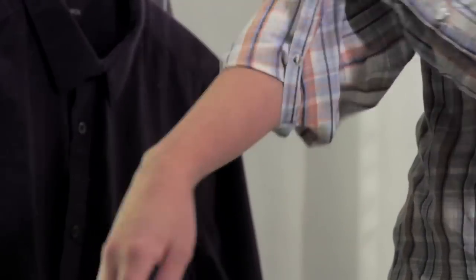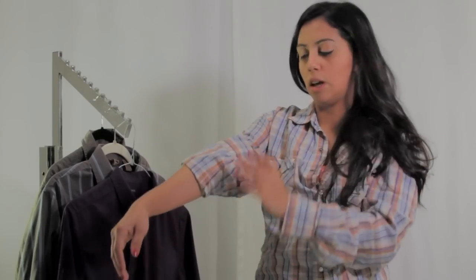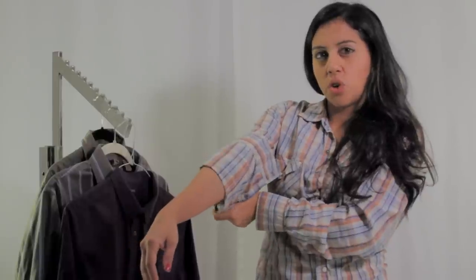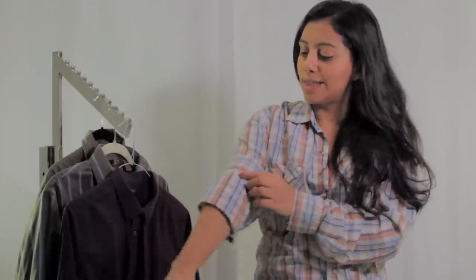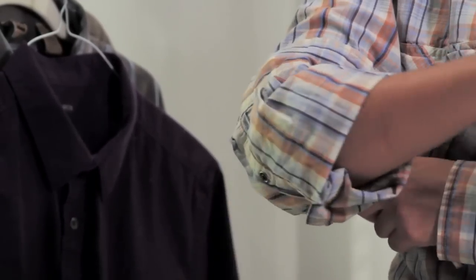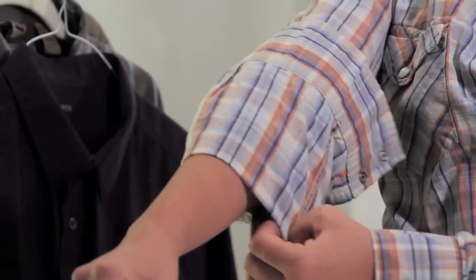Take the end of the cuff and you're going to roll it up to just above the elbow. A good measurement for this so you know how far to go is that seam line at the bottom of the cuff. You can match it up to right where your elbow bends and that'll give you a good measurement of how far up to roll it.